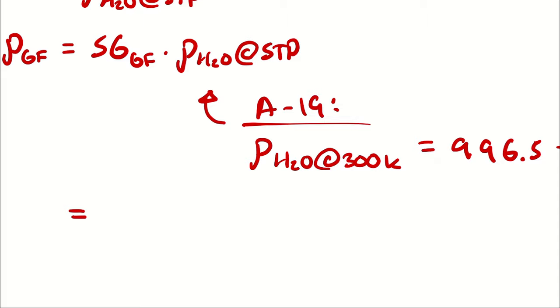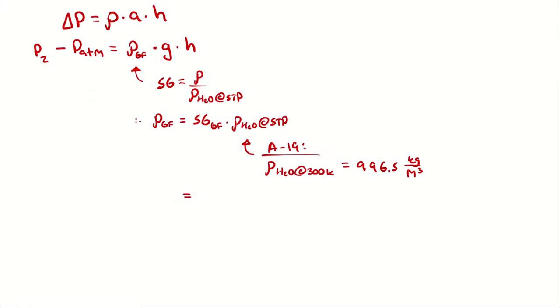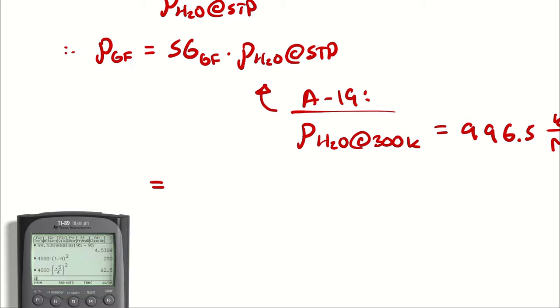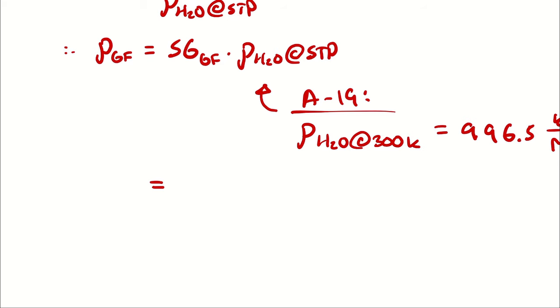Then, when we multiply by specific gravity, that is 0.85, we would come up with a density of the gauge fluid. Personally, I would prefer to just keep that within the other calculation that we're going to be performing, but just for fun here, let's calculate an actual number. We get 996.5 multiplied by 0.85. We have 847.025 kilograms per cubic meter. That's the density of our gauge fluid.